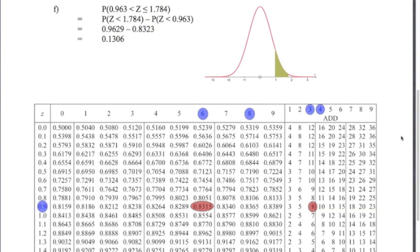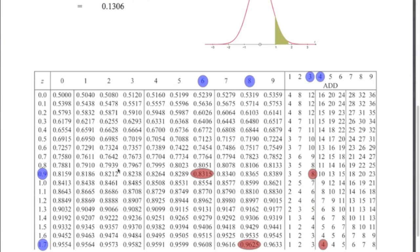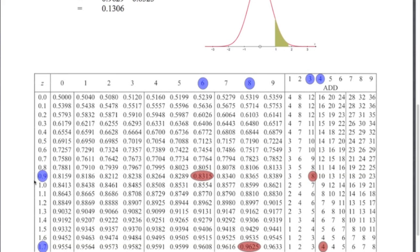Part F, we've got what's the probability between two positive Z values. Easiest way to do this is work out the area from the larger number all the way down. Work out the area under the curve from the smaller number all the way down. And subtract those two, which will give you this little area here. So 1.784, show that in the tables. 1.78 gives me this value. Looking up 4, going down to this row. So I need to add on 4 to the last decimal place there. So that first probability is 0.9629. Then I've got to look up 0.963. So 0.96 is this value. I look up 3 and come down here. It's 8, so I've got to add an 8 onto that last place there. So it's going to be 0.8323. Subtract those two to give me the answer, 0.1306. You can also round these values to three significant figures and give that answer as 0.131.